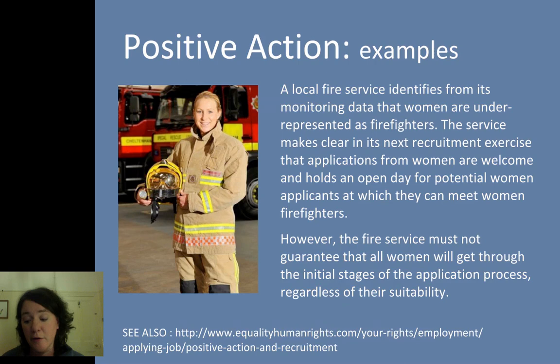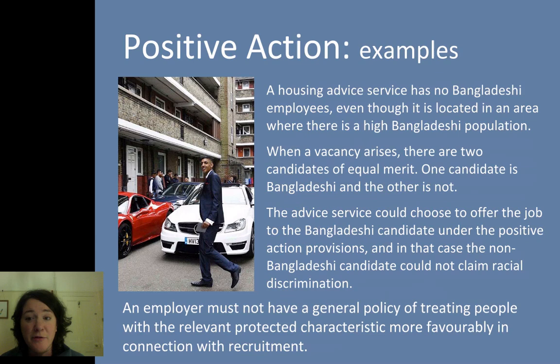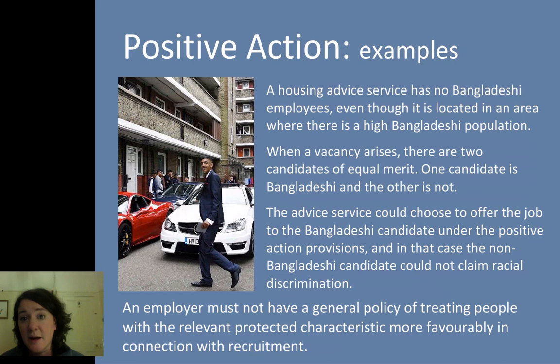In the second example, a housing advice service has no Bangladeshi employees even though it's located in an area with a really high Bangladeshi population. The next time a job comes up, there are two candidates of equal merit — the same experience and the same qualifications. One candidate is Bangladeshi and the other isn't. In this circumstance, the advice service could offer the job to the Bangladeshi candidate under the positive action provisions, and the non-Bangladeshi candidate wouldn't be able to claim racial discrimination.